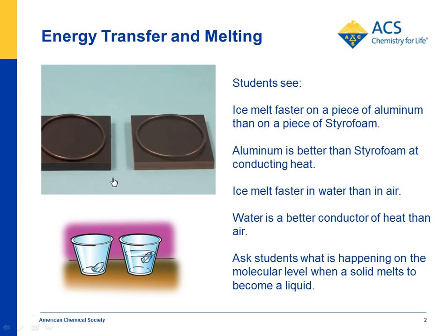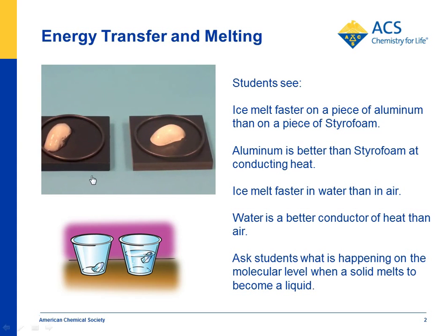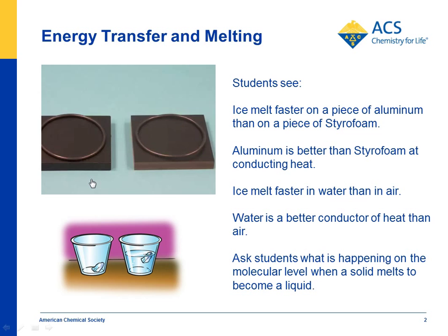If you have this equipment, you can use it, but if you don't, we have a video on the site that you can show kids. This block is aluminum, and this one is like a plastic foam, and even though they're both at room temperature, the ice melts a lot faster on the aluminum than it does on the foam. The reason is that the piece of aluminum is a lot more massive — there's more matter here. So this block, even though it's at the same temperature, has more energy. But one other reason is that it also transfers the energy much better.